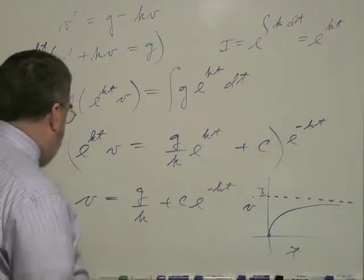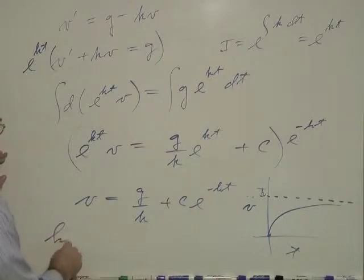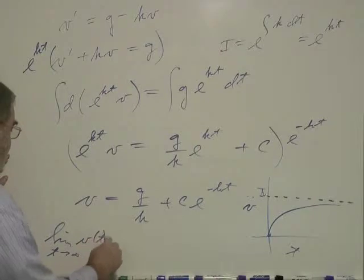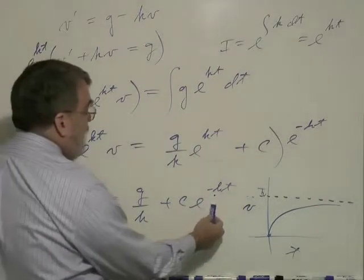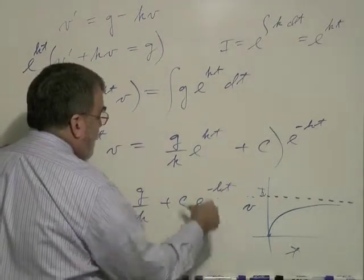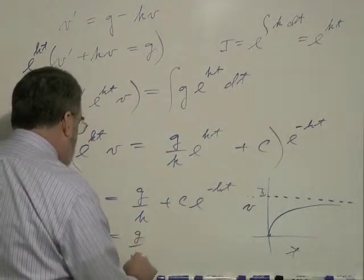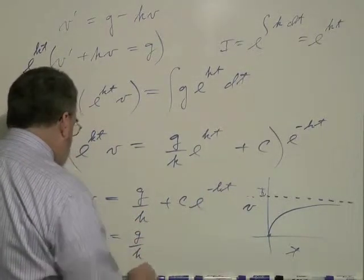So now you can see that because if you take the limit of v as t goes to infinity, v is a function of t, then this term here goes to zero.